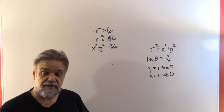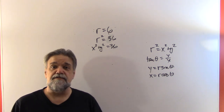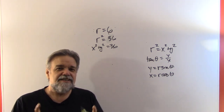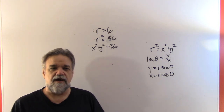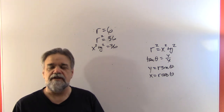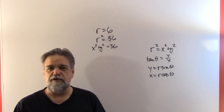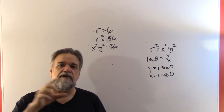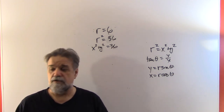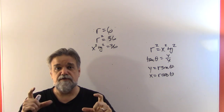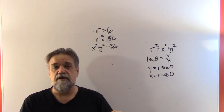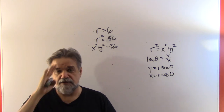So what do you get out of this video? You get an introduction — just an inkling — of how one graphs something using polar coordinates, and also a little introduction of how you convert from polar functions into functions using rectangular coordinates. In the next video, we're going to go backwards: starting with functions using x's and y's and converting to functions using thetas and r's. Till then, bye-bye.